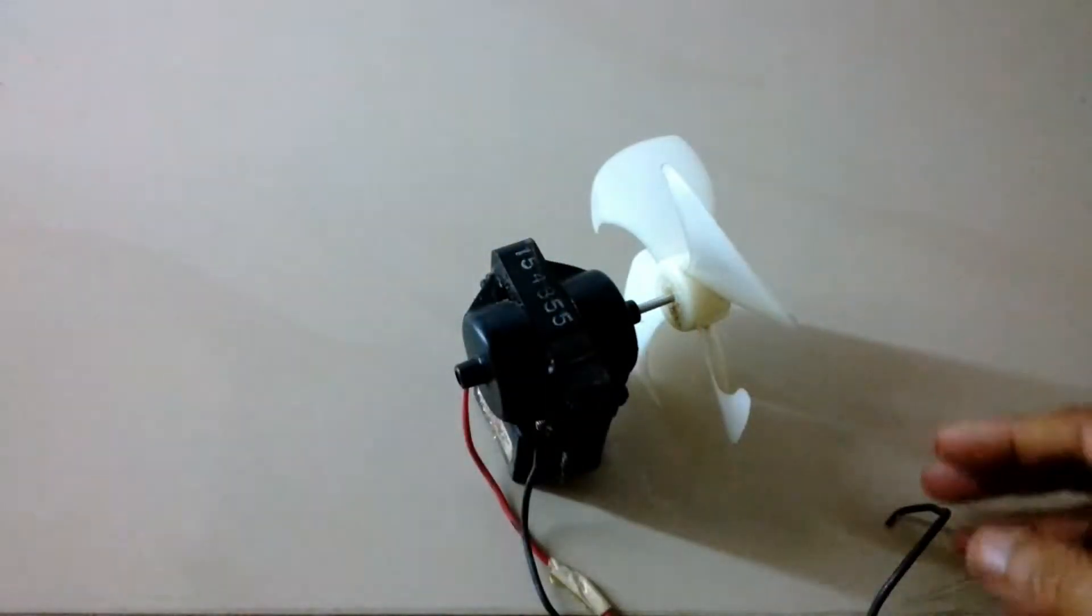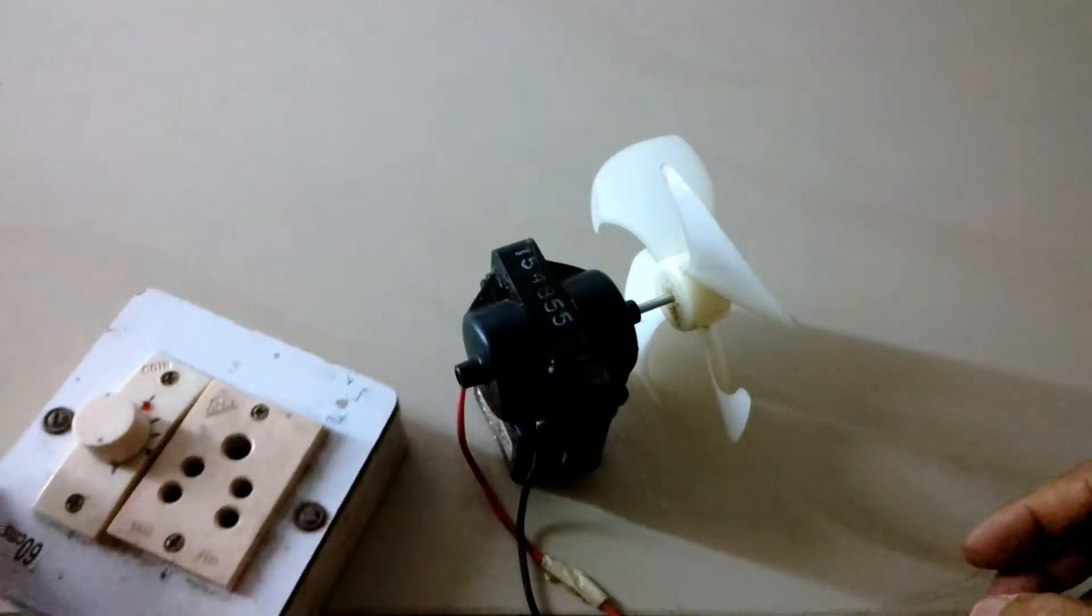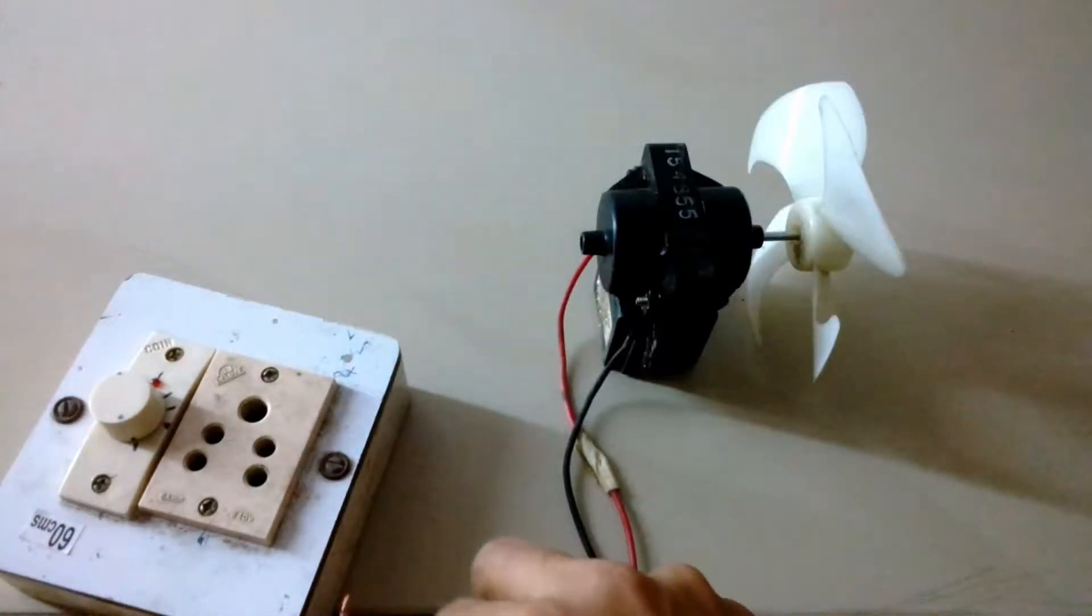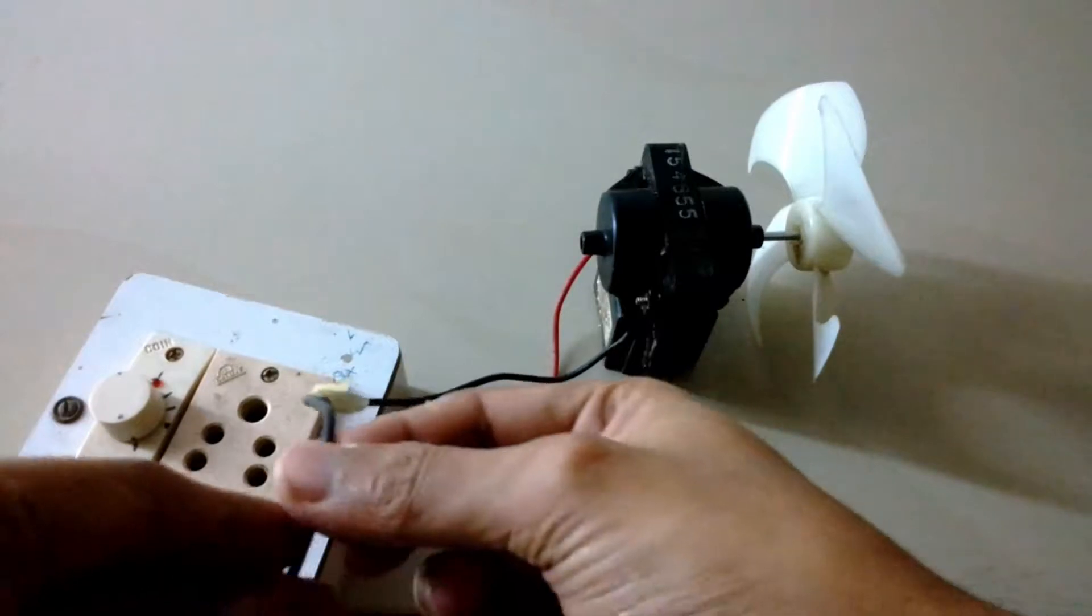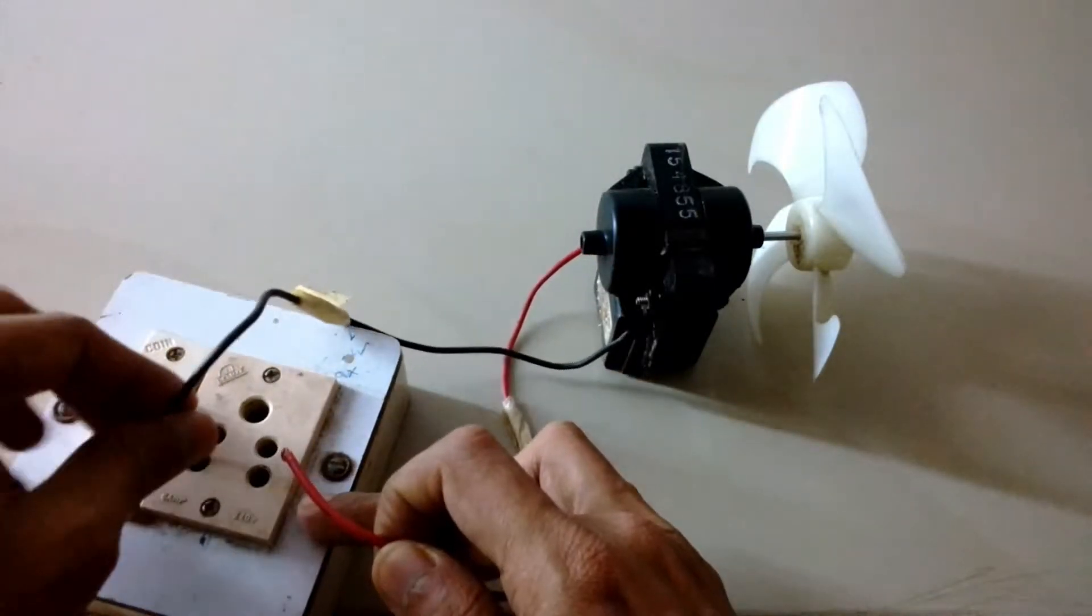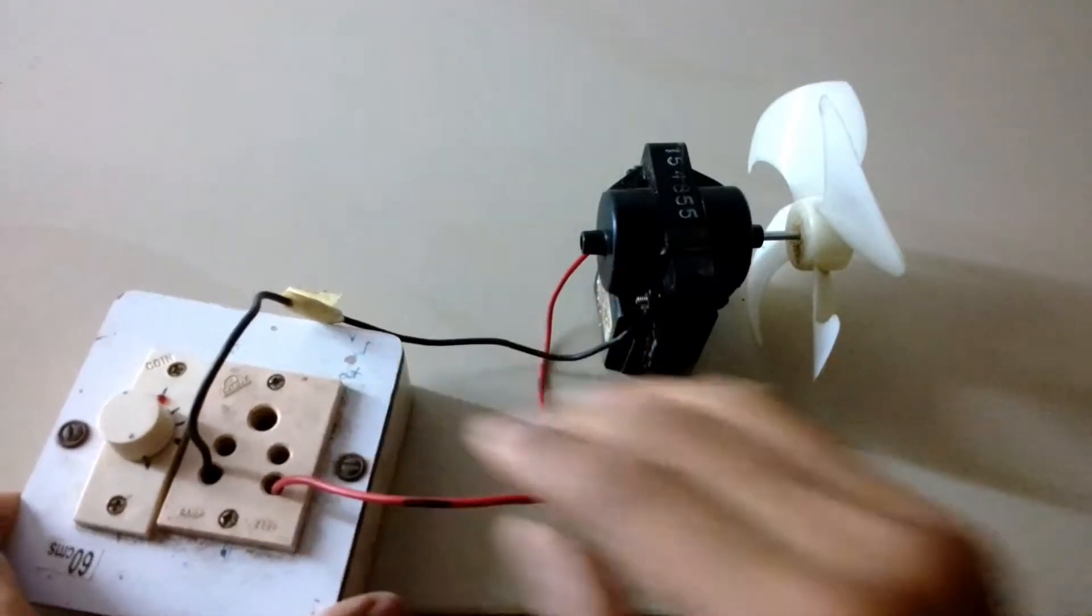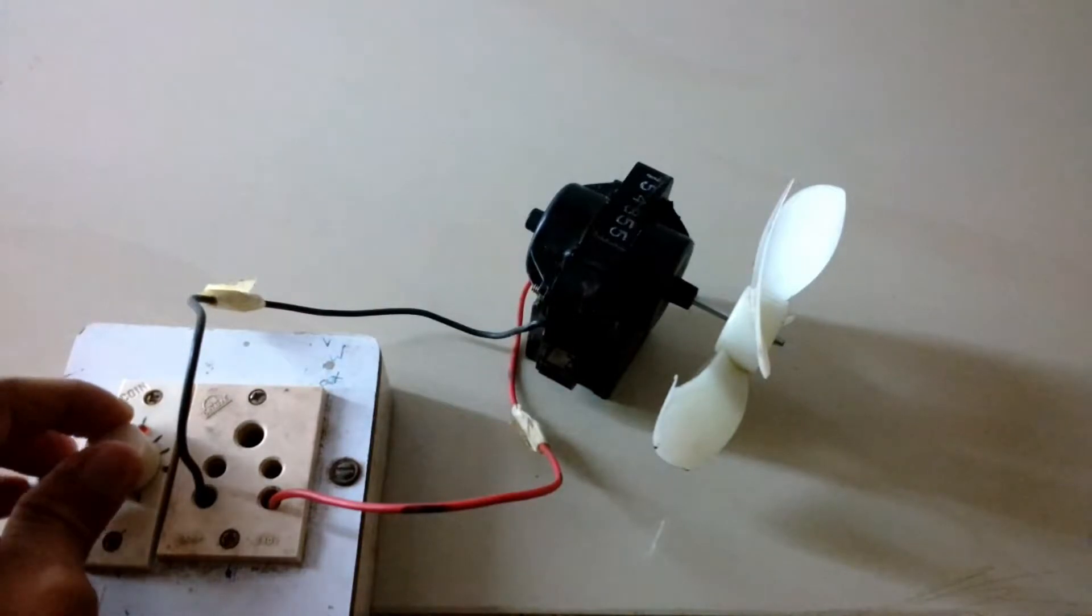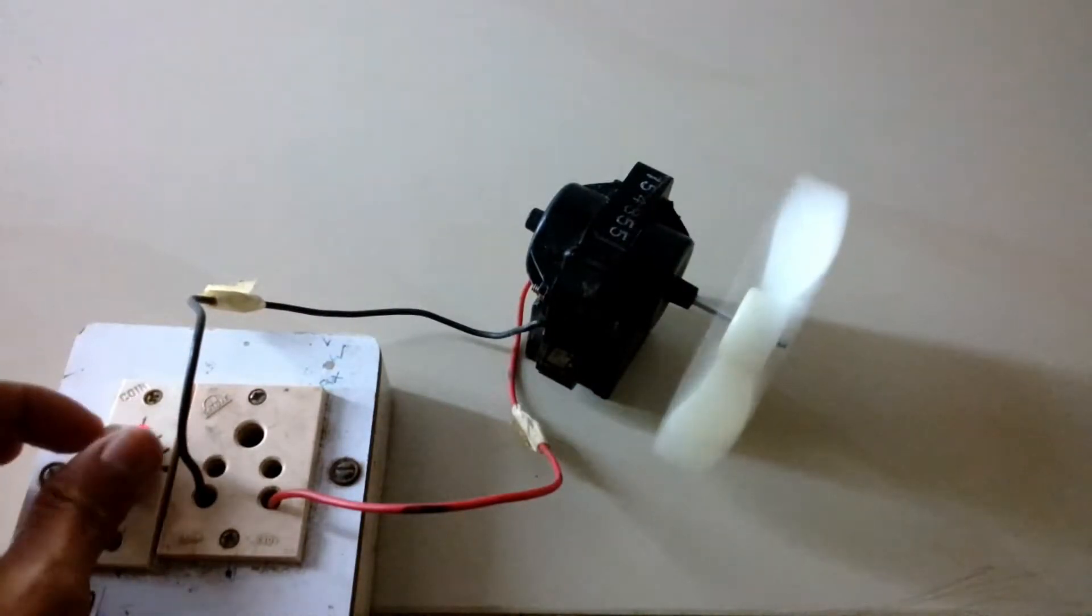Today I thought to show you how it works and why it's called a shaded pole induction motor. I'm going to power it and show you how it works. This is a 220 volt AC power source. As you can see, it works really fast.